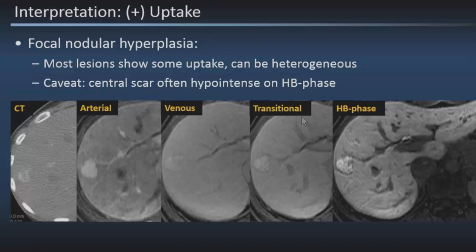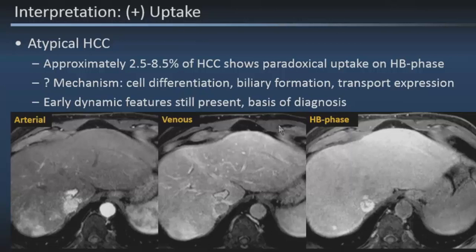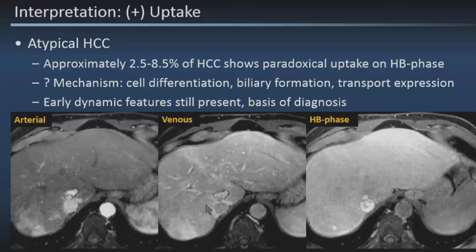Here's a case of an atypical HCC. About 2% to 8% of HCCs will show this paradoxical uptake of contrast material in the hepatobiliary phase, believed to be related to cell differentiation providing sufficient transport proteins. But it's really not ambiguous because the early phase images are still diagnostic — arterial enhancement, intralesional washout, and capsule-like enhancement fulfilling all the major criteria for LI-RADS make this an HCC. The fact that it takes up contrast on the hepatobiliary phase is just a bonus to tell the pathologist it's a well-differentiated or atypical version.